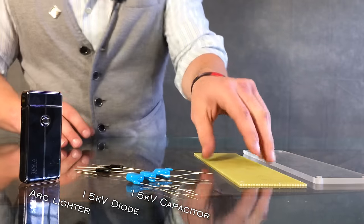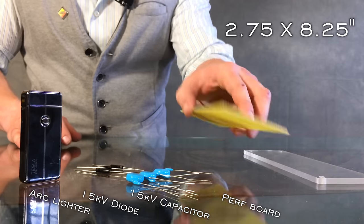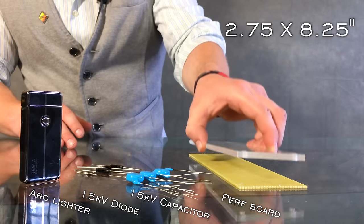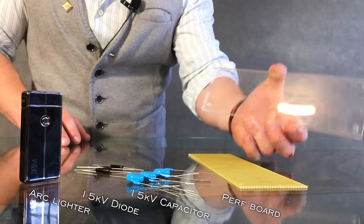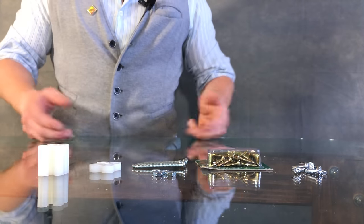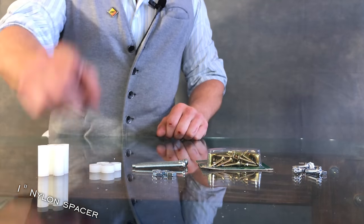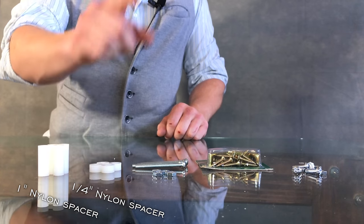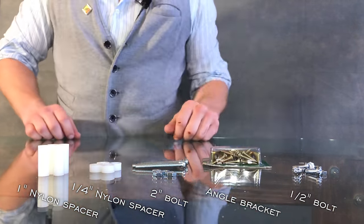And something to build those components onto is our perforated prototyping board. This is quite crucial. Now for structure, and of identical dimensions as that prototyping board, we need two pieces of quarter-inch acrylic and nylon spacers. This device also requires various mounting hardware as well, including four one-inch nylon spacers, four quarter-inch nylon spacers, four two-inch bolts, four angle brackets, and four half-inch bolts.